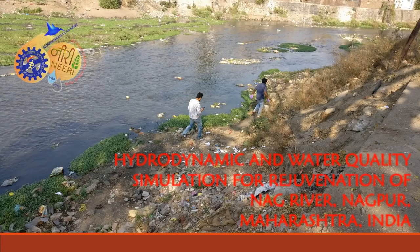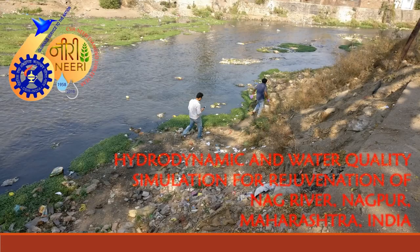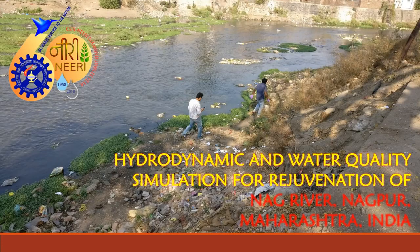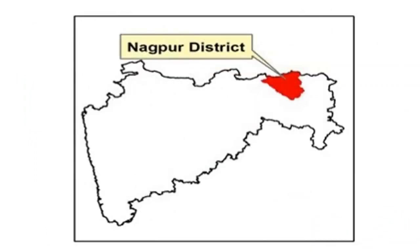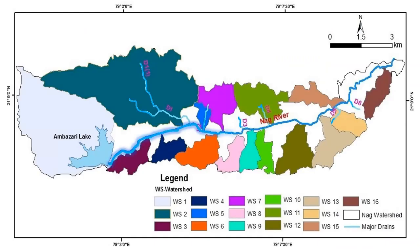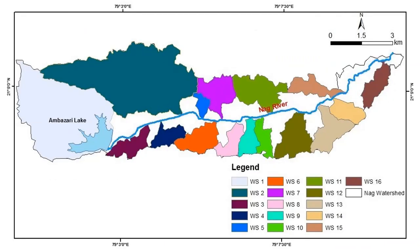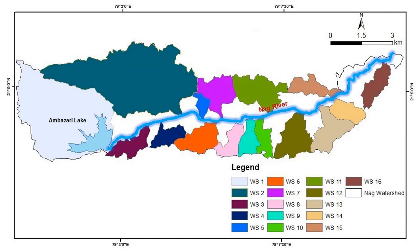This video elucidates the research study conducted by CSIR NERI for Hydrodynamic and Water Quality Simulation for Rejuvenation of Nag River in Nagpur, Maharashtra. Nag River originates from Ambajhari Lake on the western side of Nagpur. The total stretch of the river is approximately 17 km up to the confluence point of River Peely.